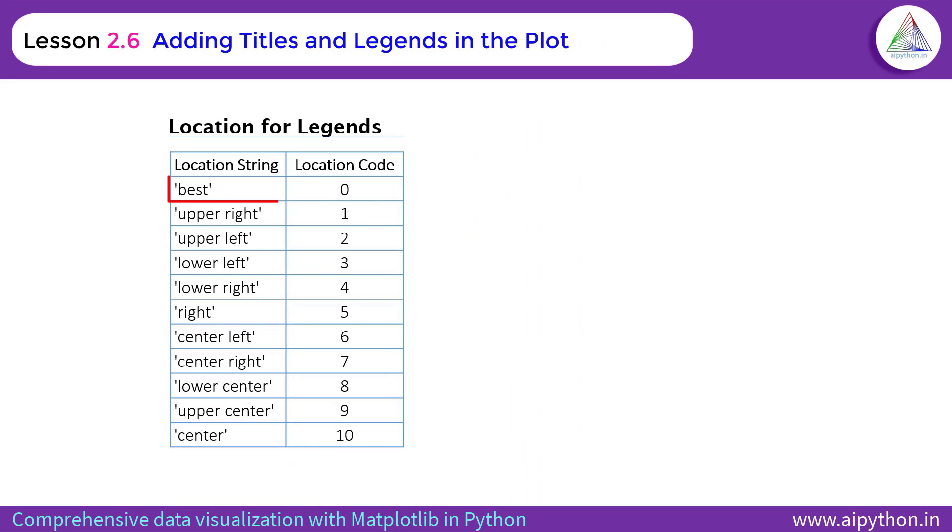And there are various possible positions. So you have best which takes care of where to put the legends automatically and then remaining like upper right, left, center, right, lower center and various options are there. You can play with them. You can also use the location code in case if you are not familiar but I think string is better option because it gives a clear sense of where you are putting the legends.